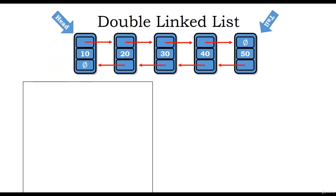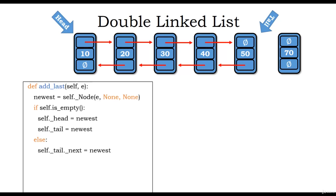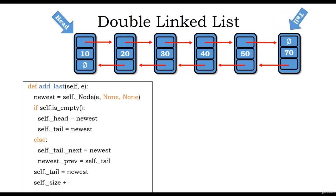To insert at the end, we define add_last and create a newest node the same way. If the list is empty, head and tail both point to newest. Otherwise, tail.next is assigned the reference of newest, and newest.previous is assigned the current tail. Then we move tail to newest and increment the size.